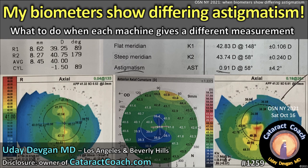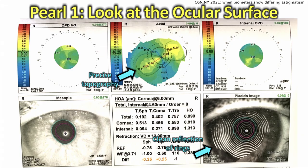cataractcoach.com: my biometers show differing astigmatism — what to do when each machine gives a different measurement. Pearl one: look at the ocular surface. You can see that precise topography — that's a really nice looking butterfly or figure-of-eight ring there of astigmatism.